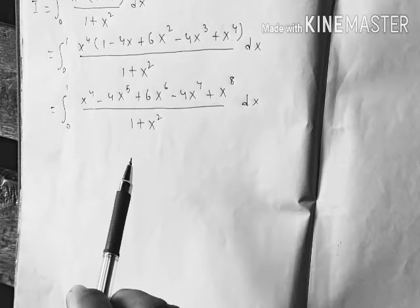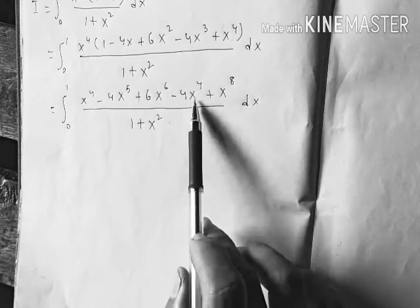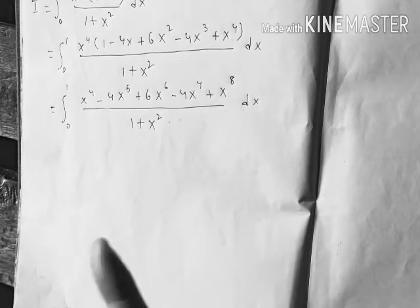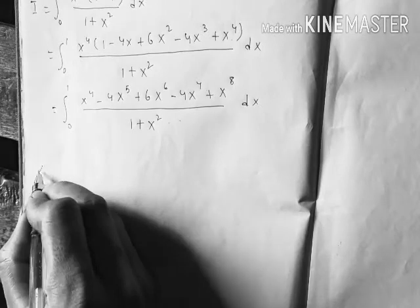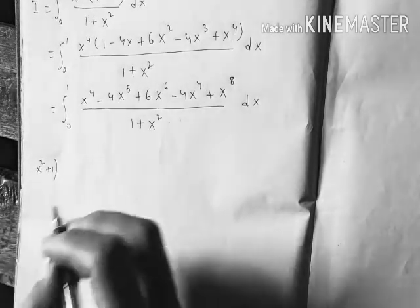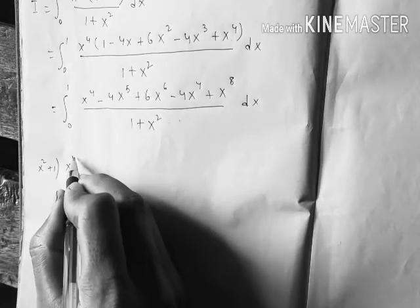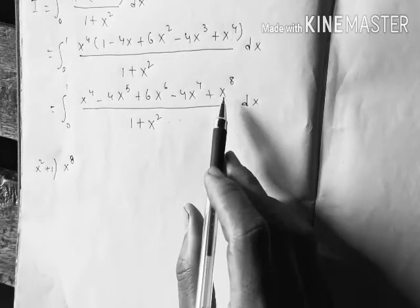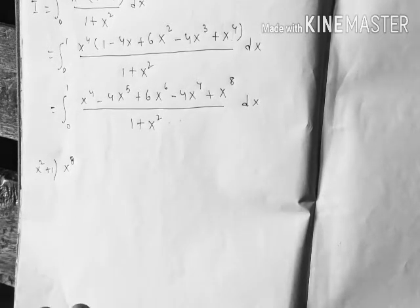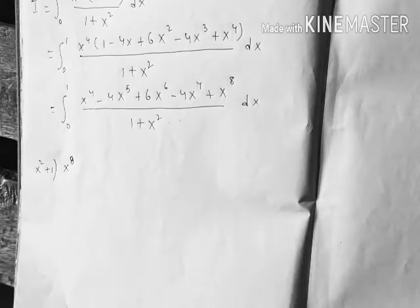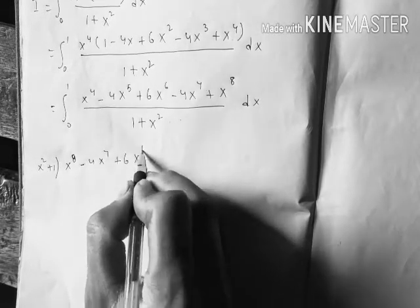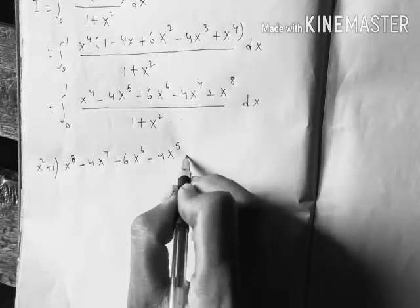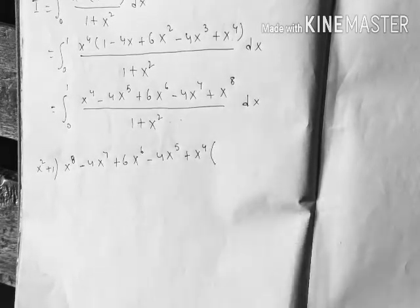Now I'm going to use the long division method to divide the numerator by the denominator and simplify. We divide x² + 1 into the numerator, arranging the polynomial in descending order of degree: x⁸ minus 4x⁷ plus 6x⁶ minus 4x⁵ plus x⁴.